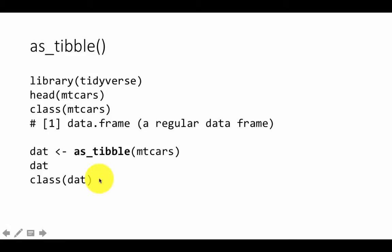If you do class dat, it will tell you that it is indeed a tibble. It tells you that it is a data frame because a tibble is just a specialized version of a data frame. It also tells you that it is a tibble and also a tibble data frame.